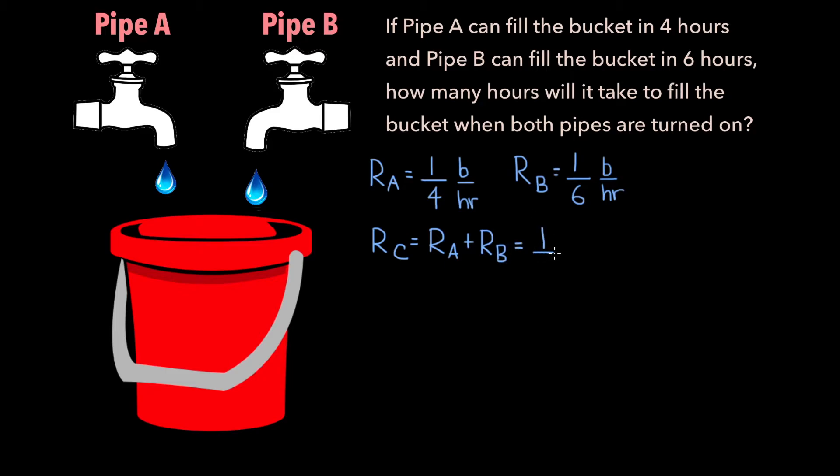This is of course equal to 1 fourth plus 1 sixth. Now we can take the common denominator here to simplify and we get 3 over 12 plus 2 over 12. 3 plus 2 is 5, so we end up with the combined rate being 5 over 12 buckets per hour.